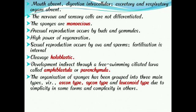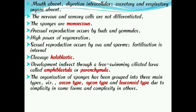The development is indirect, through a free-swimming ciliated larva called amphiblastula or parenchymula. The larval forms of Porifera are called amphiblastula or parenchymula. Indirect development means the embryo develops into a young one through intermediate larval stages. The organization of sponges is grouped into three main types — Ascon type, Sycon type, and Leuconoid type — due to varying degrees of simplicity and complexity.